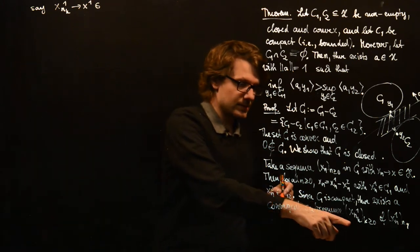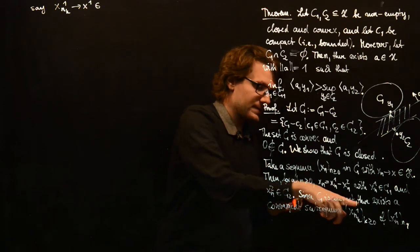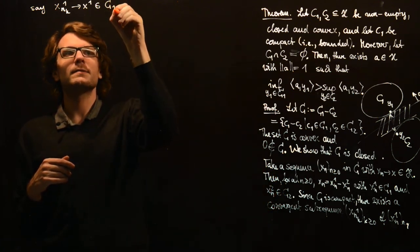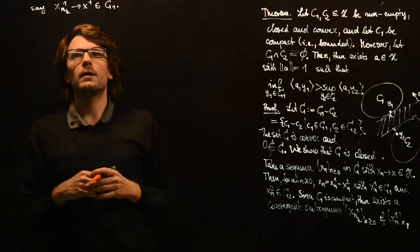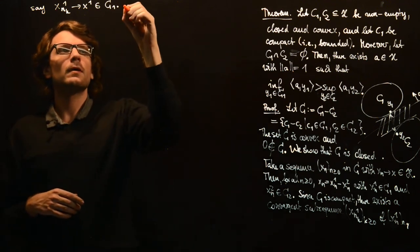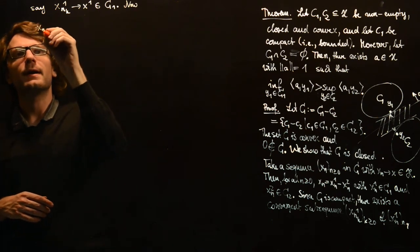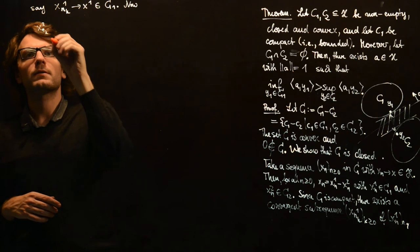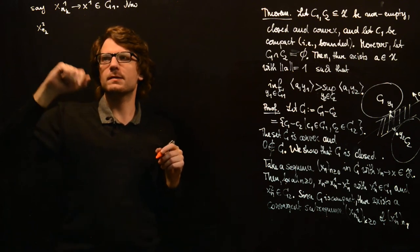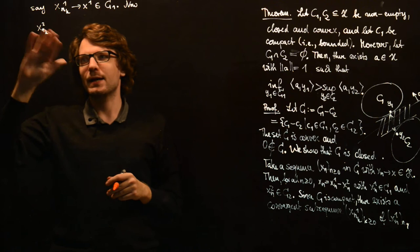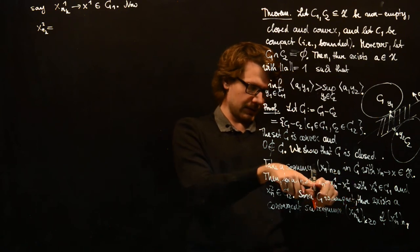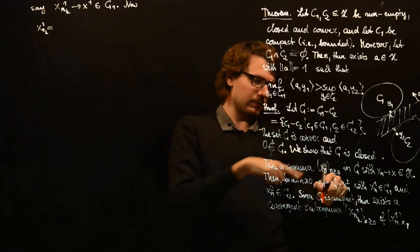And since this is a sequence in C1 and the set C1 is closed, we have x1 in C1. Now, let's take a look at the sequence xn2. Now, xn2 and more concretely the subsequence xnk2 where we use the same indices as we have used in the x1 sequence. So xnk2, this is xnk1 minus xnk.